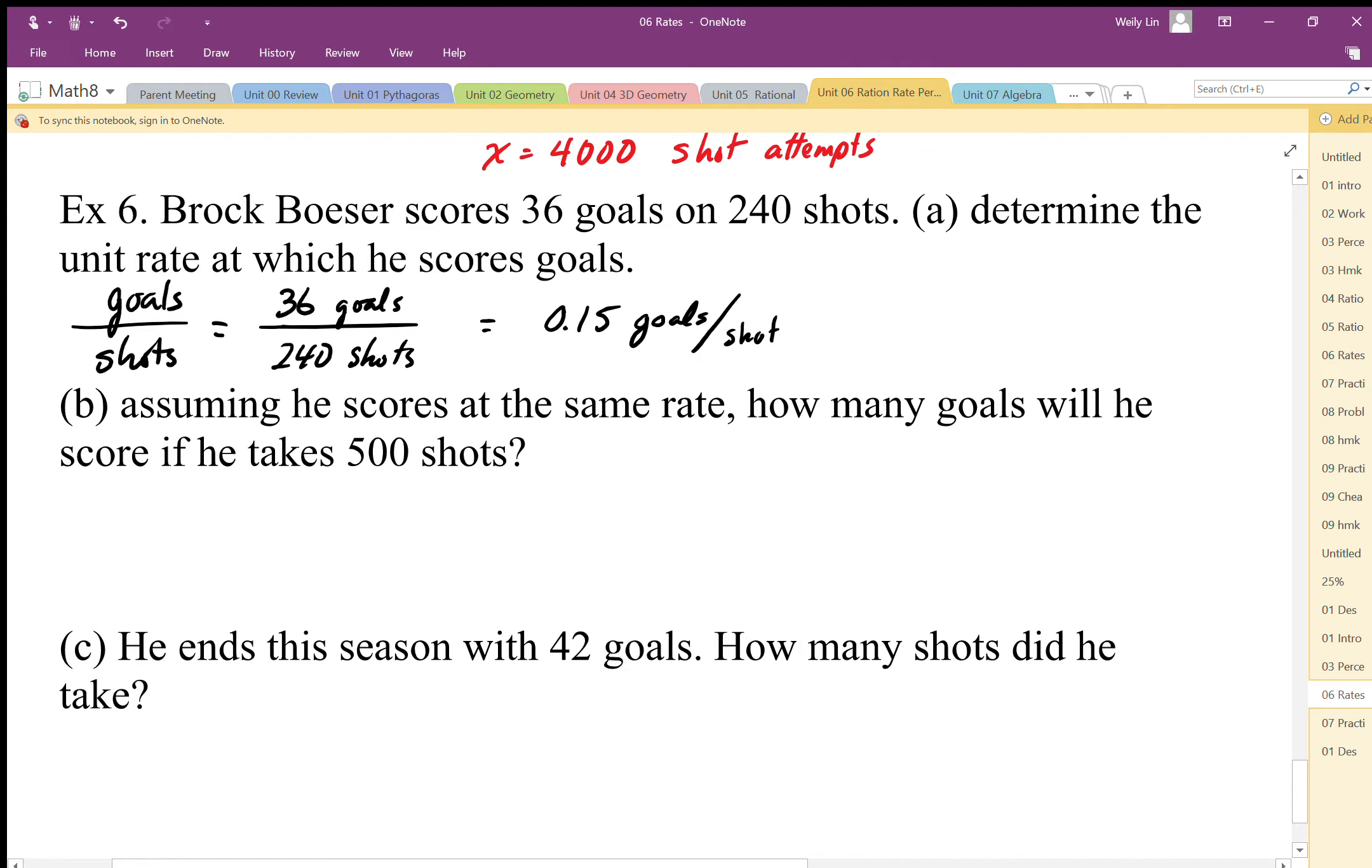Assuming he scores at the same rate, how many goals will he score if he takes 500 shots? The goals per shot, I'm going to use my unit rate: 0.15 goals for one shot equals x goals for 500 shots. The nice thing about this unit rate is my multiplier from bottom to top, and my calculation is going to go from bottom to top, so it's times by 0.15. 500 times 0.15 gives us 75 goals.